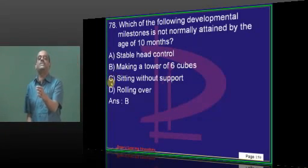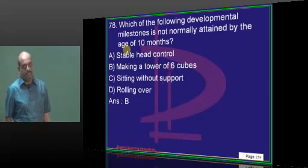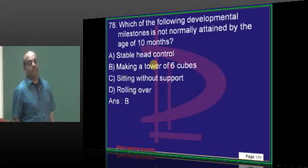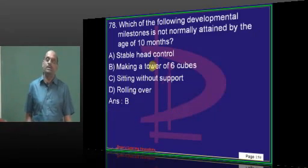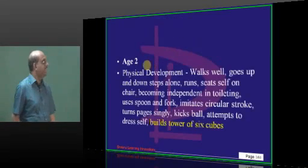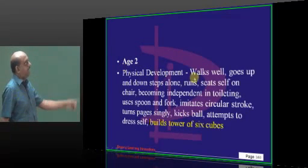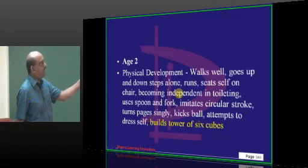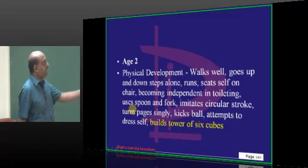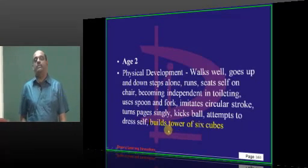In the developmental milestones, without a question on DMS there is no paper. At the age of 10 months, what basically happens? All these milestones are achieved but not making the tower of six cubes. When will that happen? At 24 months, age 2. He walks well, goes up and down alone, he runs, sits self on chair, becomes independent in toileting, uses the spoon and fork, and builds tower of six cubes.